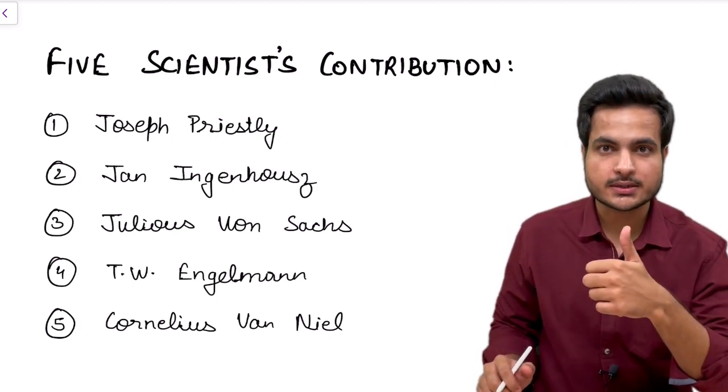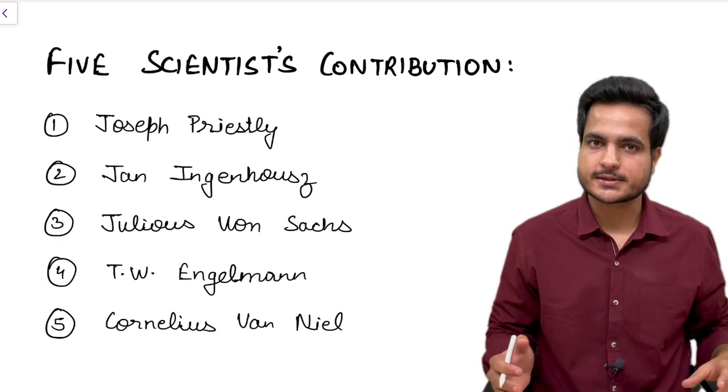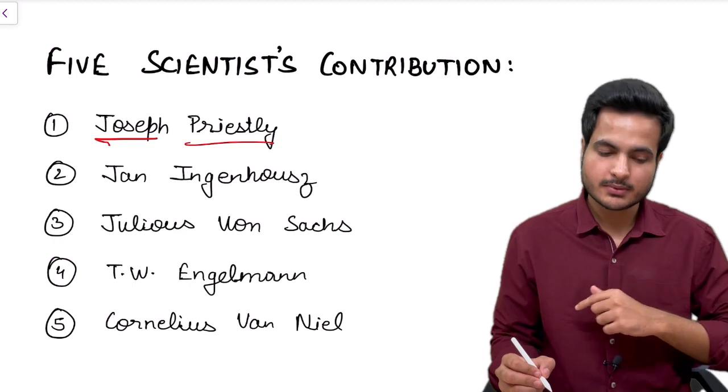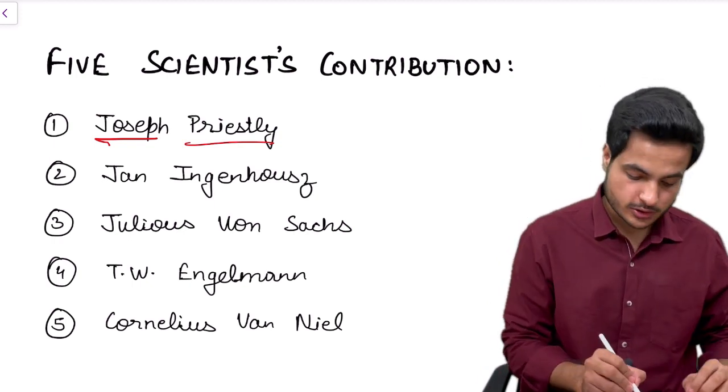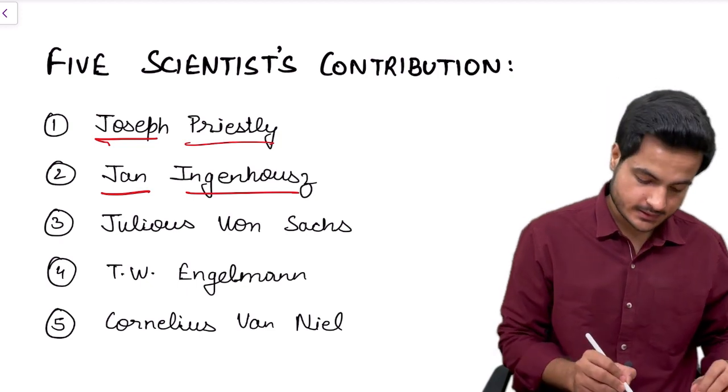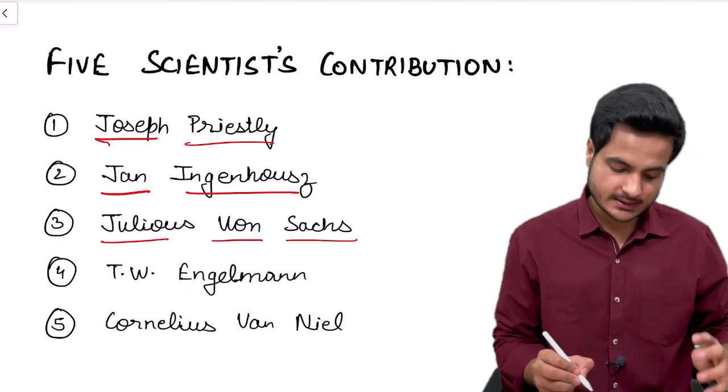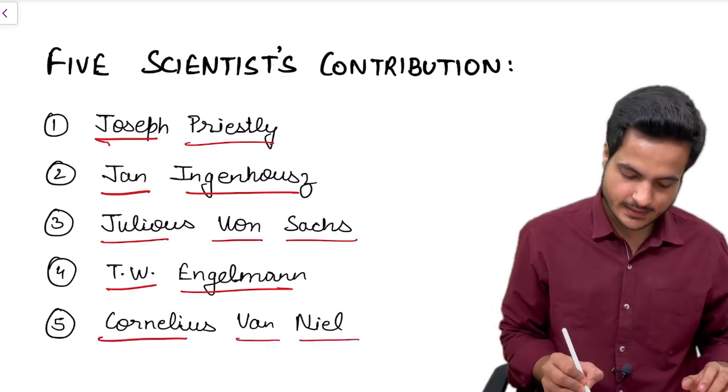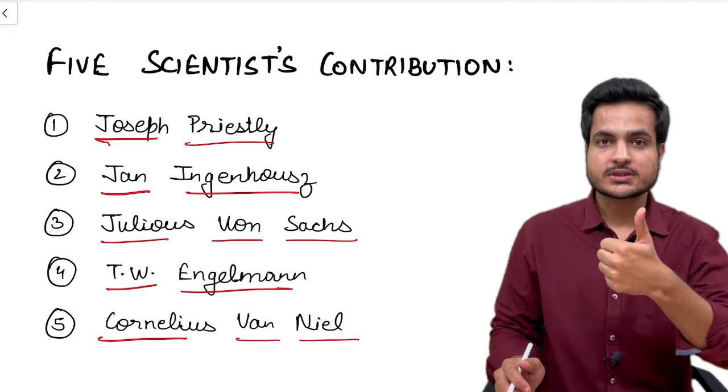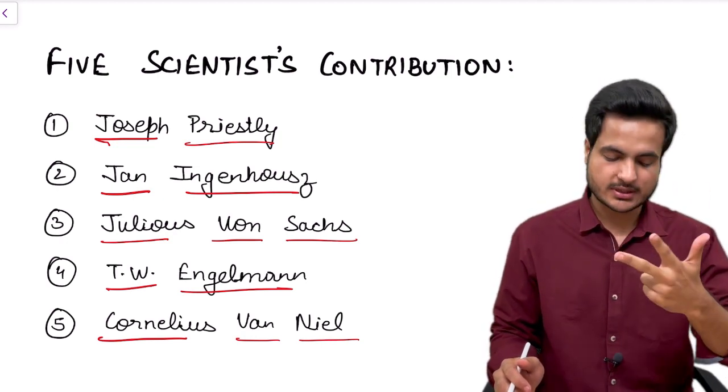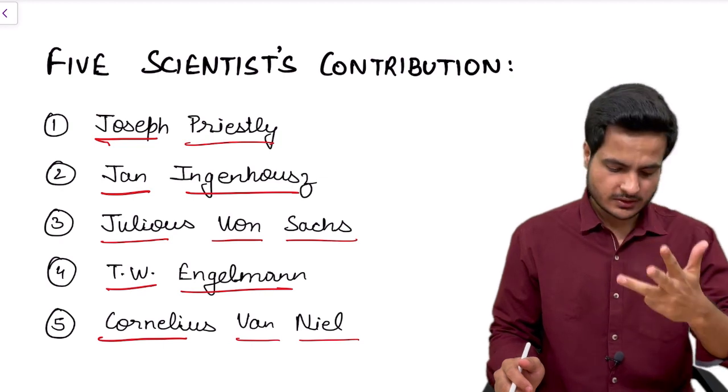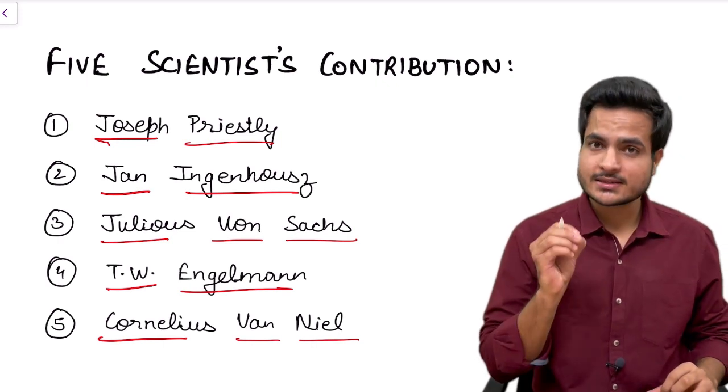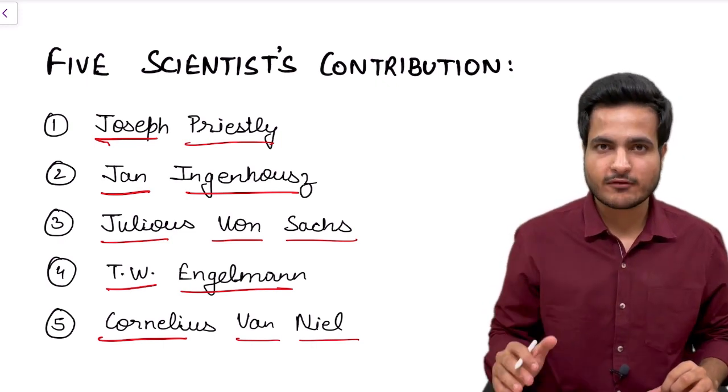Let's start with the first scientist who laid his views on photosynthesis and he was Joseph Priestley. The second scientist was Jan Ingenhousz, third scientist Julius Von Sachs, fourth scientist T.W. Engelmann, and fifth scientist Cornelius Van Niel. These are the 5 scientists. Let us study what these scientists individually have contributed.